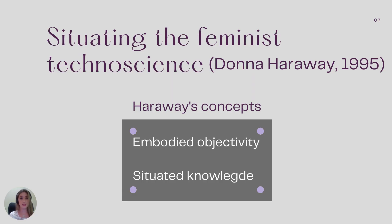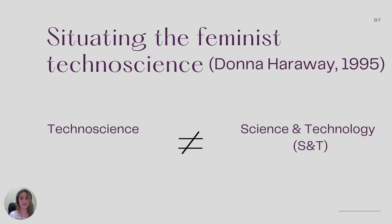To situate feminism in science, we appropriate two concepts from Donna Haraway. The first is embodied objectivity, and the second is situated knowledge. Embodied objectivity critiques the idea of neutrality and objectivity in science and technology. Situated knowledge holds that all knowledge is situated and partial. She thinks the term 'technoscience' — written together — is inseparable, because she considers that one depends on the other, and this term is a criticism of science and technology.